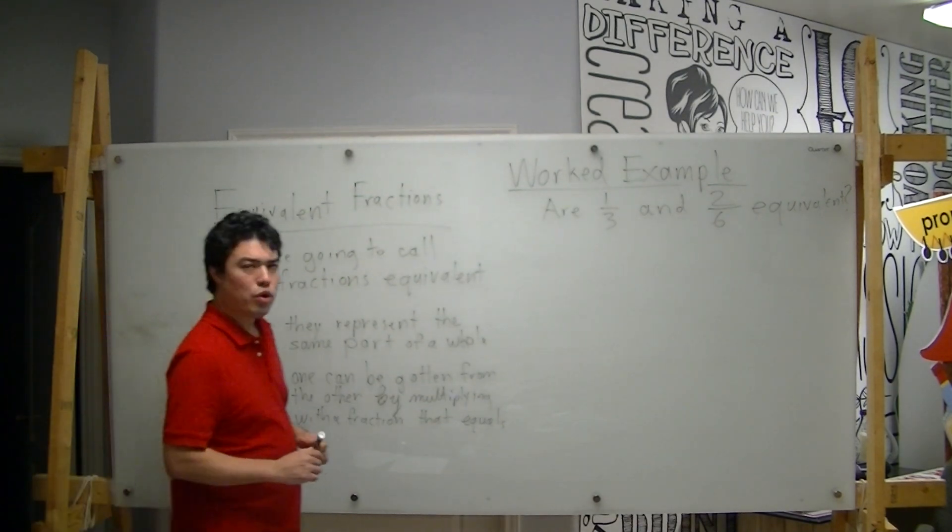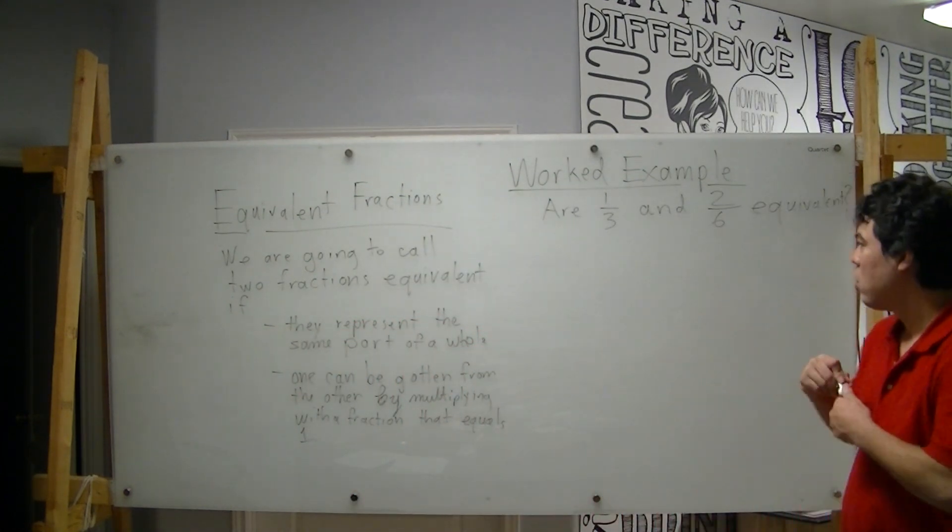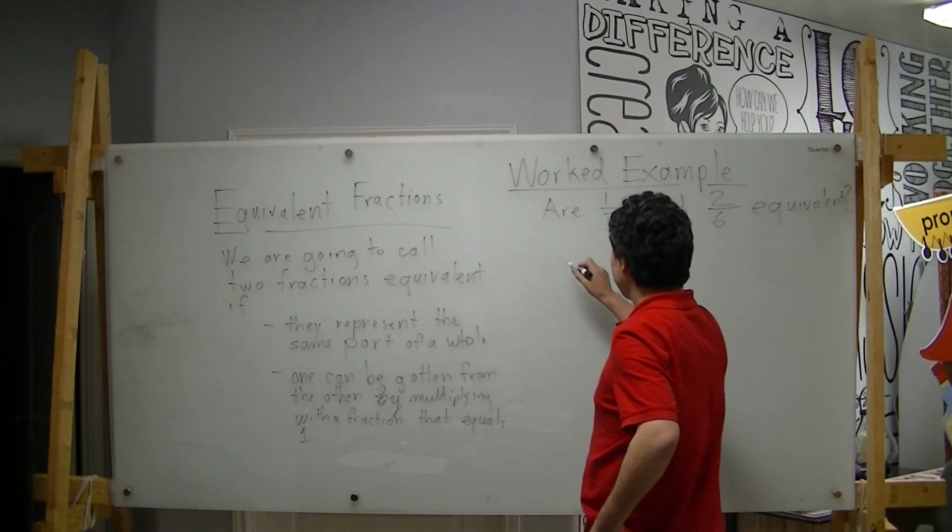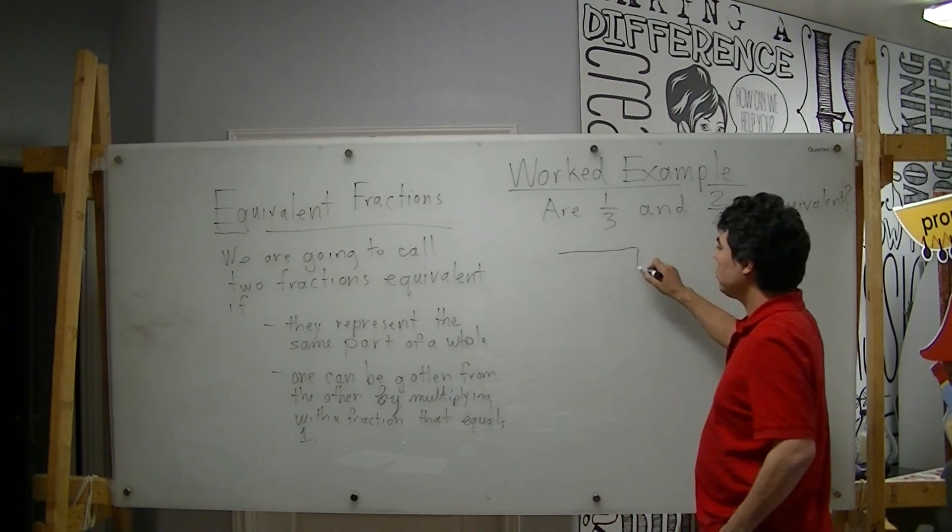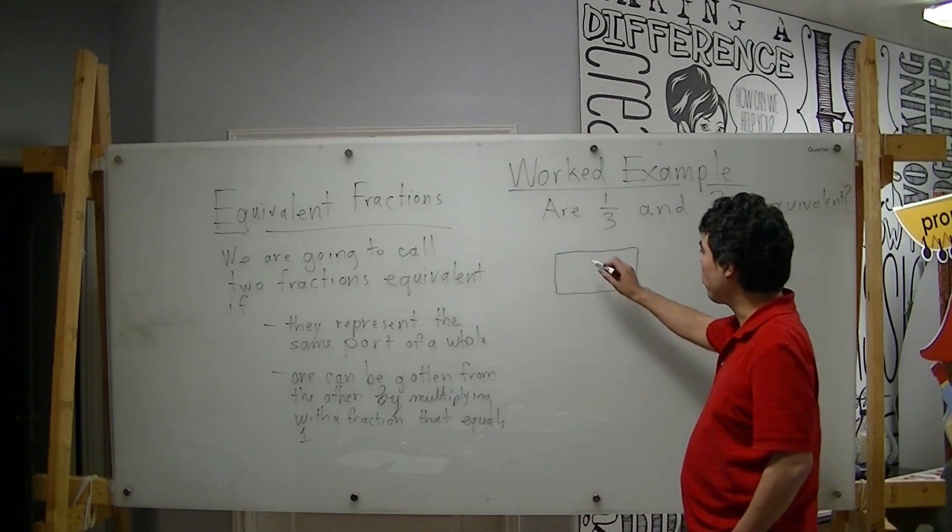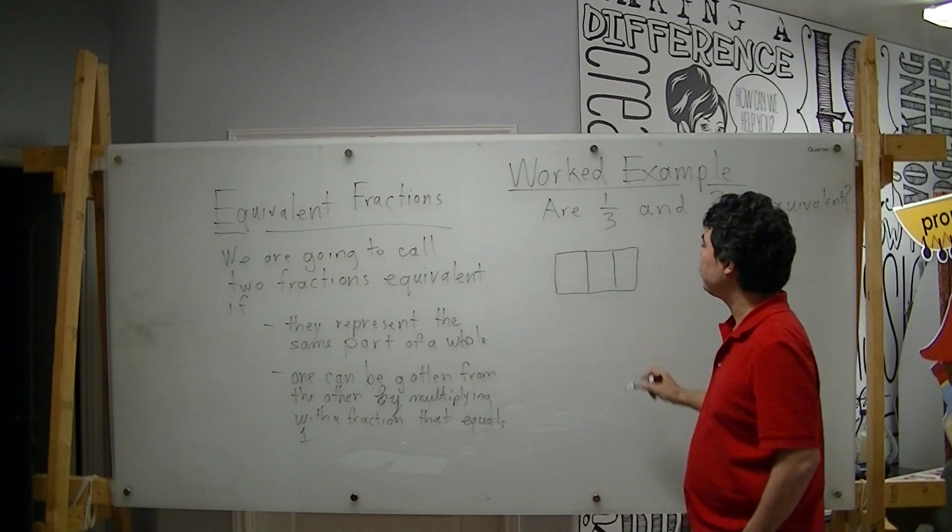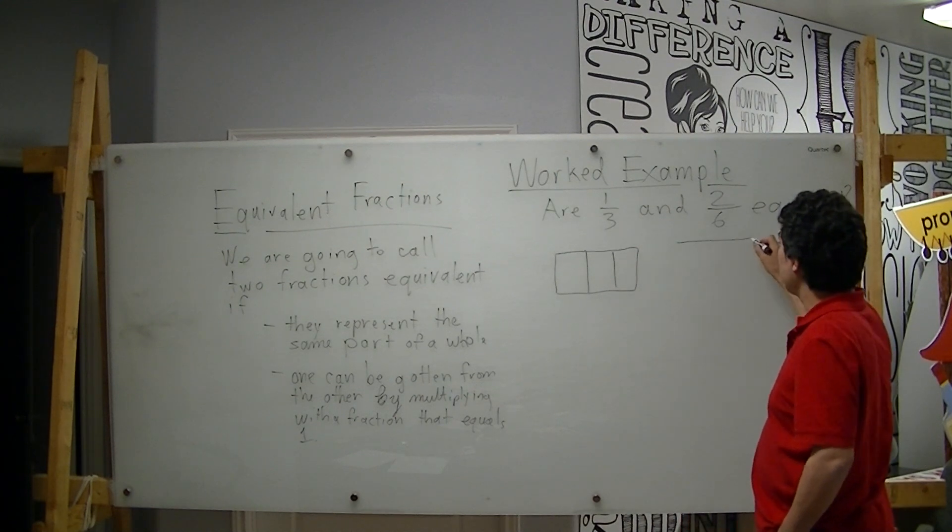So let me first show you that they represent the same part of a whole. I'm going to look at one-third like this. I'm going to take a strip. Now we can imagine that it's just a rectangle that I drew on my board or, more likely, we can imagine that it's a delicious bar of chocolate.